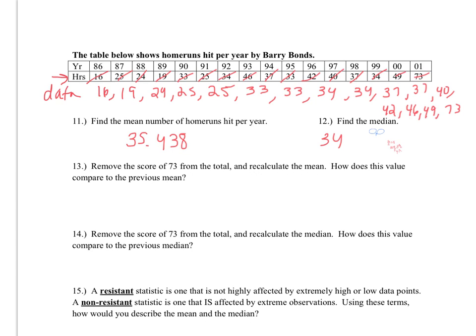Now in question 13, the problem says to remove the score of 73 from the total and recalculate the mean. The easiest way to do this is to use our previous answer we found in number 11, subtract 73, and then recalculate the mean by dividing by one less score. Our new mean, by doing this process, is going to be 32.933, and this new mean is significantly lower.